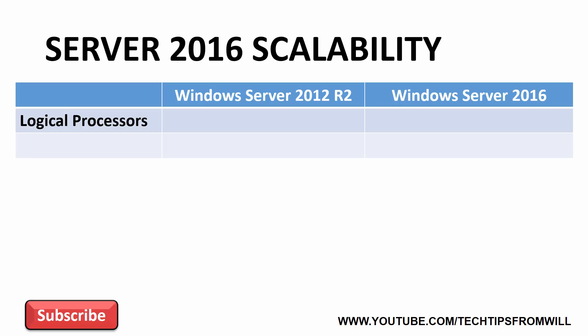Let's start by looking at logical processors. With virtualization now all the rage, the main purpose of a physical server nowadays is to host multiple virtual servers. Because virtualization is now so prolific, the maximum number of processors supported by a Windows Server is no longer measured in terms of physical processor sockets, or even by the number of processor cores. Instead, processor scalability is measured in terms of logical processors, because these are what you allocate to virtual machines. Windows Server 2012 R2 supports up to 320 logical processors per physical server, whereas Windows Server 2016 supports up to 512 of these logical processors.